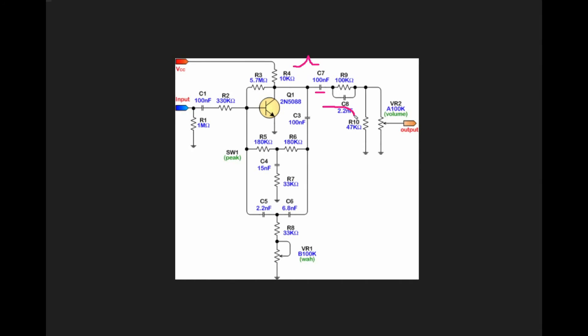C8 works in conjunction with R10 to create a high-pass filter, and R9 works in conjunction with R10 to be a voltage divider, because over here we've gained our signal up.